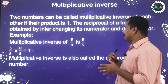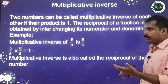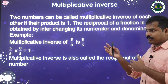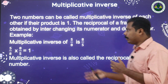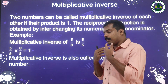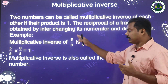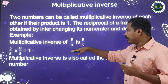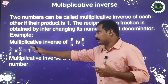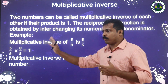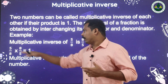The reciprocal of a fraction is obtained by interchanging its numerator and denominator. For example, the multiplicative inverse or reciprocal of 5/8 is 8/5 — just interchange the numerator and denominator. And 5/8 into 8/5 equals 1, confirming that the product of multiplicative inverses is 1.